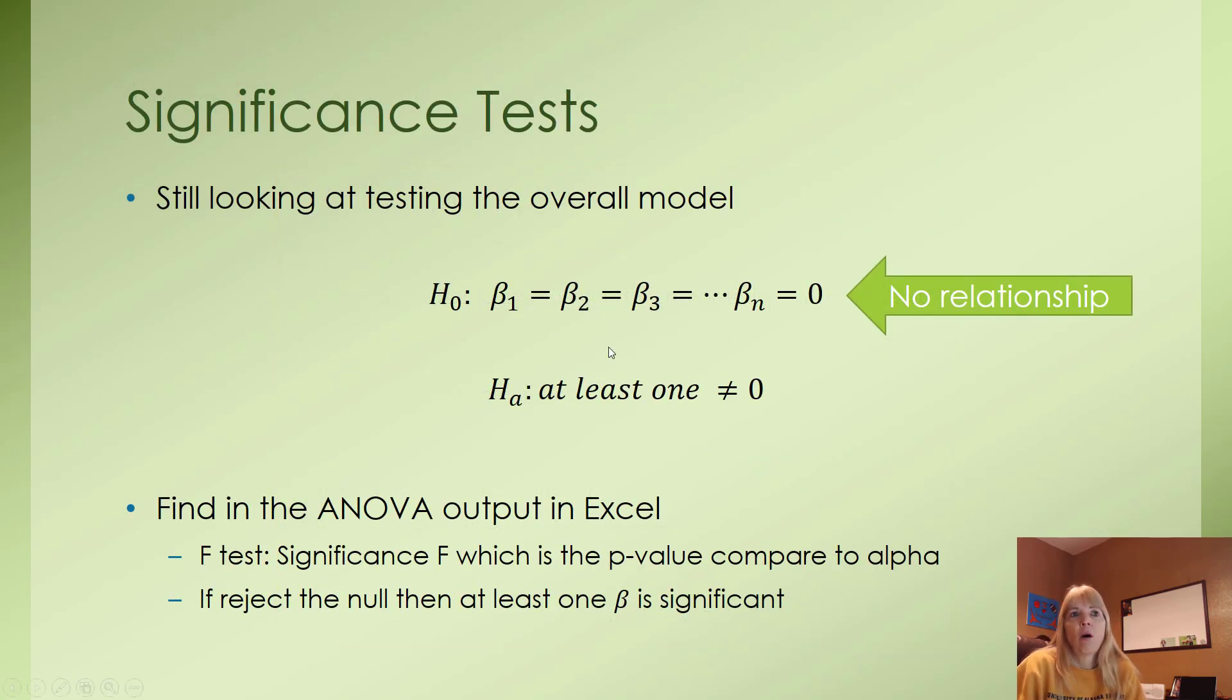We're still testing our overall model to see if there is no relationship - in other words, each coefficient equals zero, or at least one does not equal zero so we can see there is a relationship. We did this with simple regression but skipped over the ANOVA part. We're going to use that this time, reading the significance F in our Excel output, which is the actual p-value. As always with hypothesis tests, we compare our p-value to our alpha. If the p is low, the null must go.